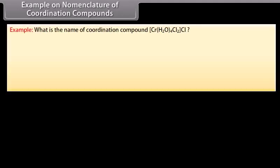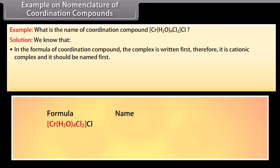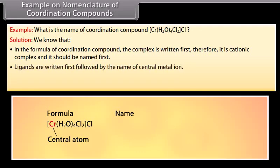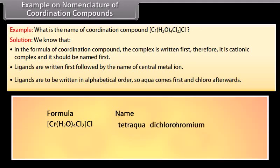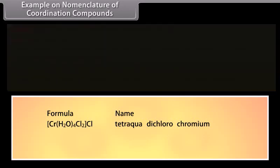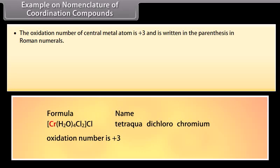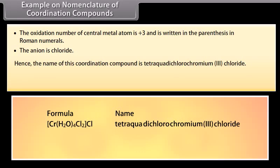Example: What is the name of the coordination compound [Cr(H2O)4Cl2]Cl? In the formula, the complex is written first, so it is a cationic complex and should be named first. While naming the complex, ligands are written first followed by the name of the central metal ion, in alphabetical order — so aqua comes first and chloro afterwards. The oxidation number of the central metal atom is +3, written in Roman numerals in parentheses, and the anion is chloride. Hence, the name is tetraaquadichlorochromium(III) chloride.